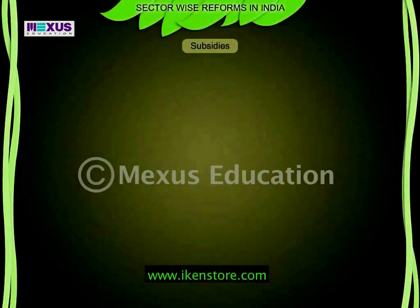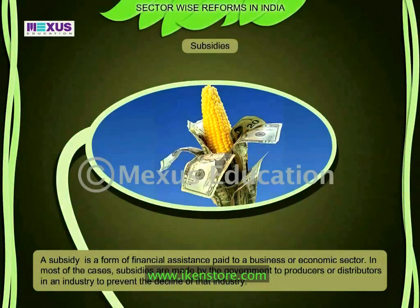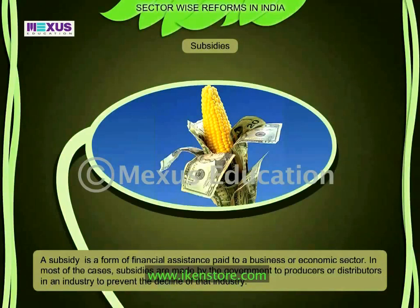What is a subsidy? A subsidy is a form of financial assistance paid to a business or economic sector. In most cases, subsidies are made by the government to producers or distributors in an industry to prevent the decline of that industry. Subsidies can be regarded as a form of protectionism or trade barrier, by making domestic goods and services artificially competitive against imports.